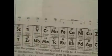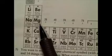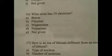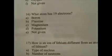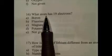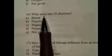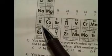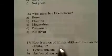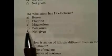Number fifteen: what element has 12 protons? Looking at the periodic table, find the number 12 — it's Mg, magnesium. Magnesium is option B. Number sixteen: what atom has 19 electrons? Atom means neutral, so it has just as many electrons as protons. Which element has 19 protons? That's K, potassium — option D.